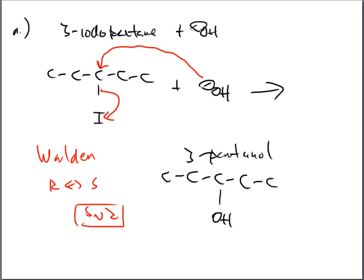In the last video we ended up with some substitution examples, and I told you this is how easy substitutions need to work. At the heart it is this easy: you find a leaving group, that leaving group goes away, and then something else goes on in its spot. However, there are details, and those details are going to fall in either the SN2 or the SN1 category.